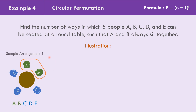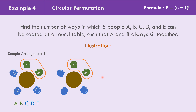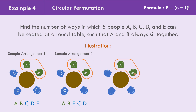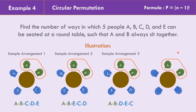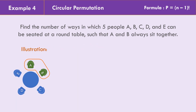Since A and B are always seated together, they are treated as one unit. Sample arrangements include: A, B, C, D, E; then A, B, E, C, D; then A, B, D, E, C; and A, B, E, D, C — with A and B always adjacent in each arrangement.